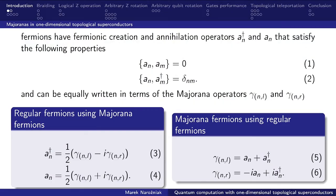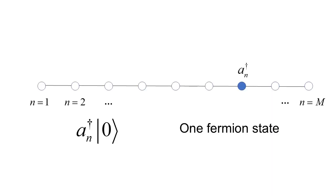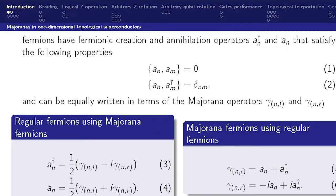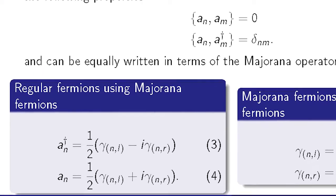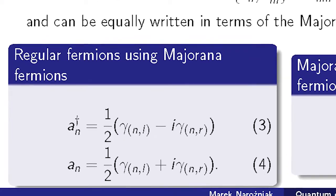So in 1D, in second quantization formalism, fermions can be expressed using fermionic creation and annihilation operators, which obey those anti-commutation rules. And each of those operators has an index, which corresponds to the index of the 1D lattice site. And each of those regular fermion operators can be expressed using two Majorana operators, as you can see on equation three and four.